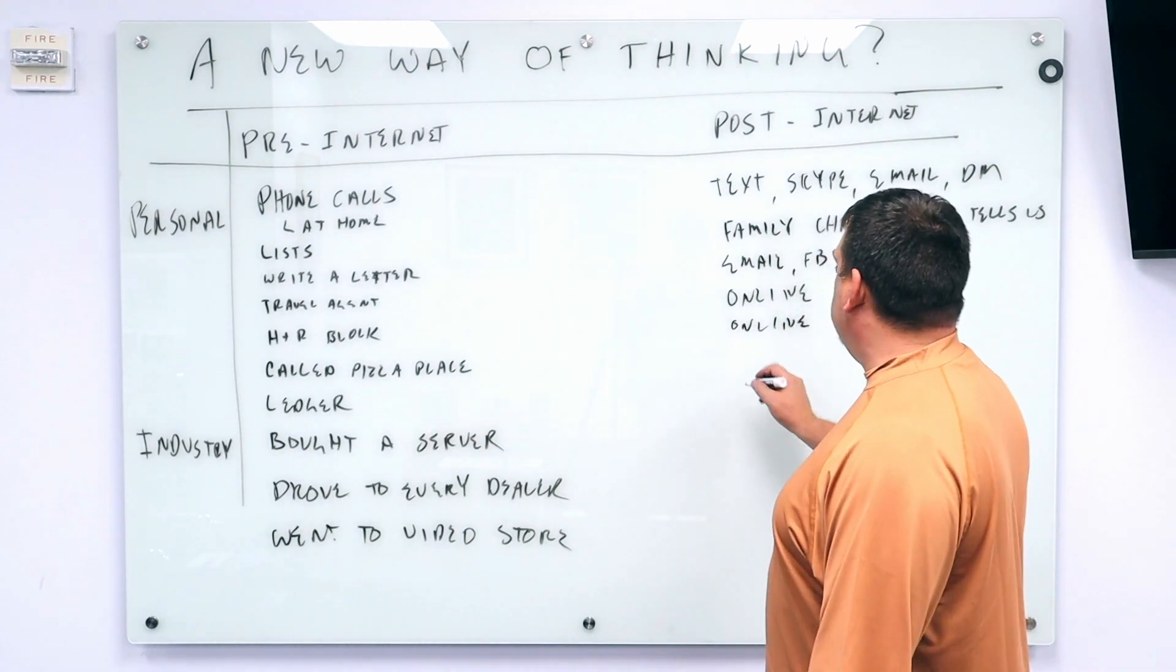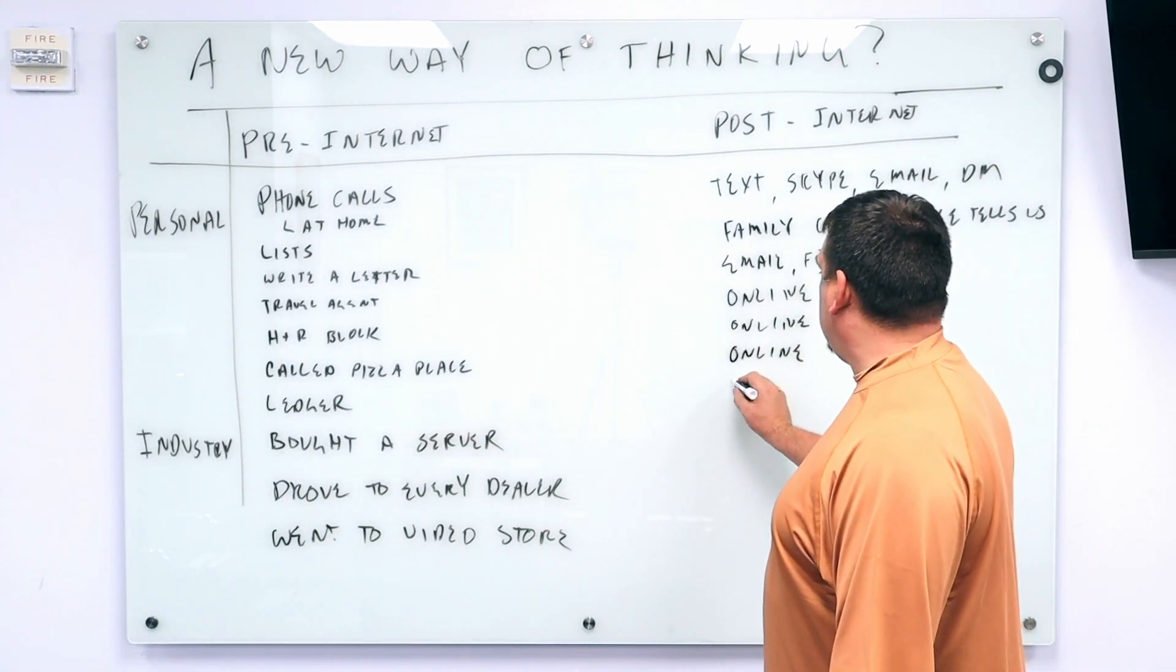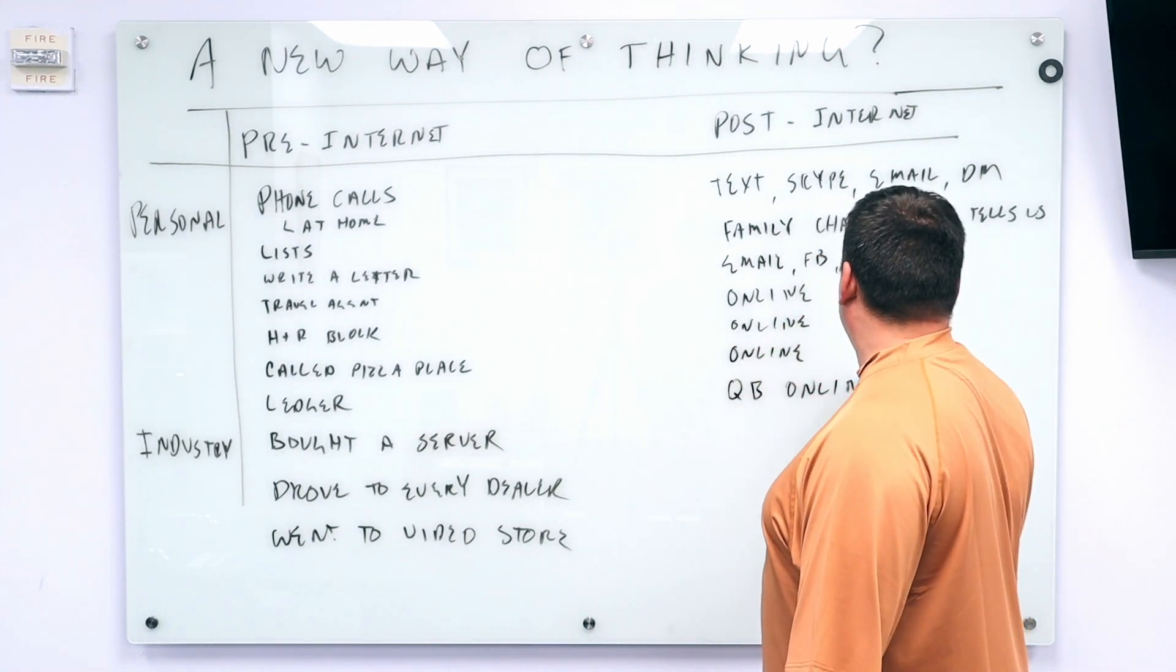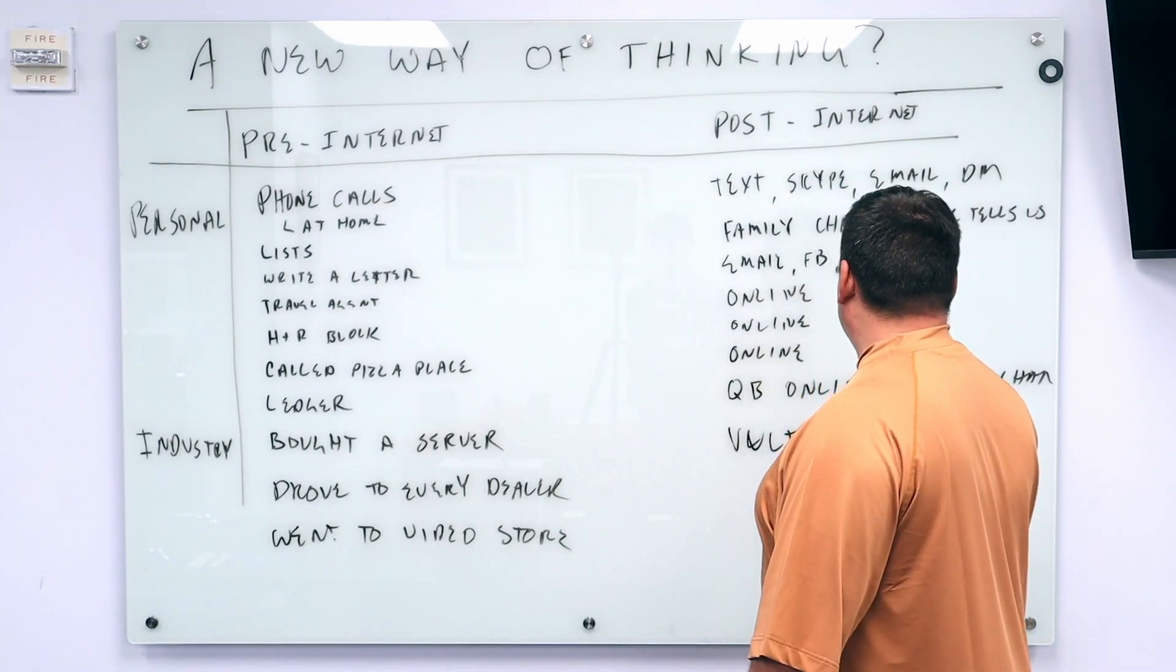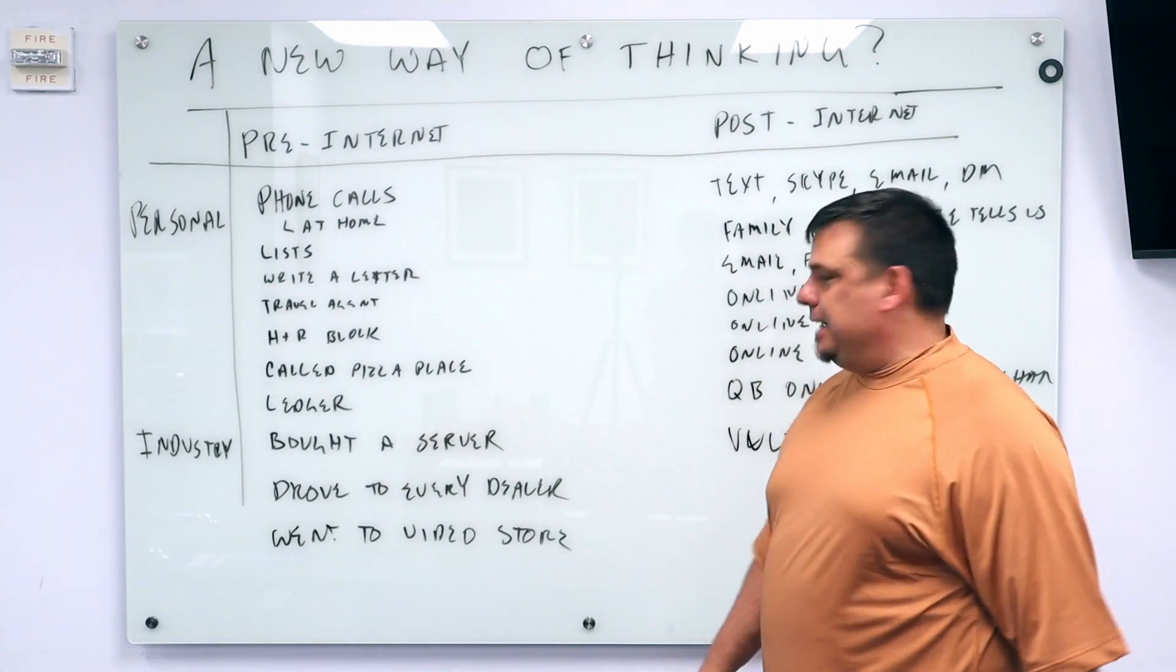Online. When you order a pizza? Online. You use QuickBooks? Online. Blockchain, yeah, blockchain. When you buy a server? Go to Vulture, go to AWS. Spin one up in five minutes.